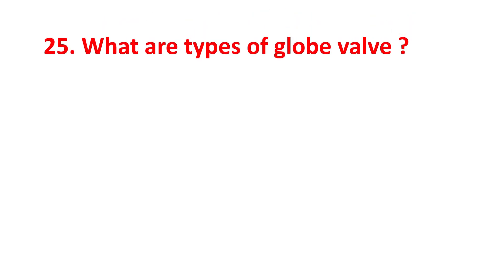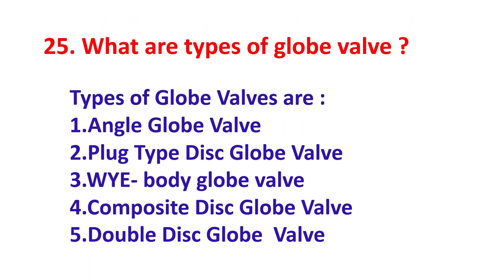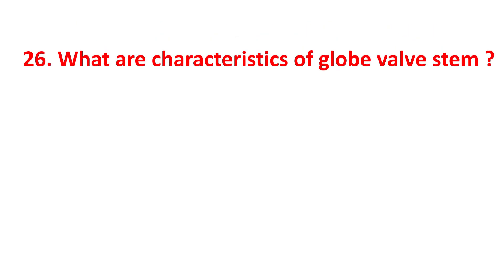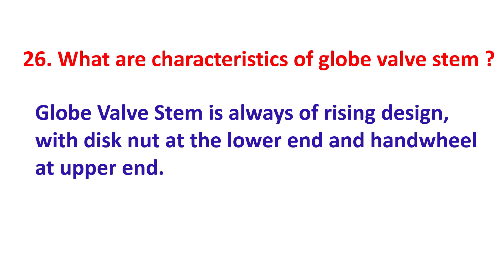What are types of globe valve? Types of globe valves are: angle globe valve, plug type disc globe valve, WYE body globe valve, composite disc globe valve, and double disc globe valve. What are the characteristics of globe valve stem? The globe valve stem is always of a rising design with a disc nut at the lower end and hand wheel at the upper end.